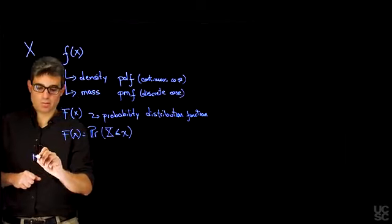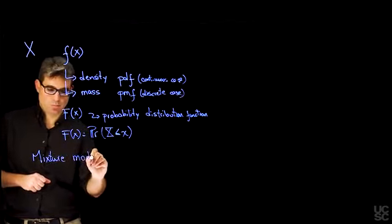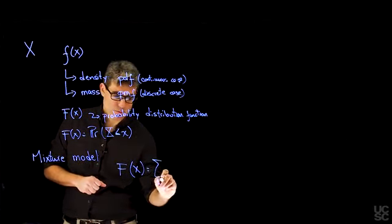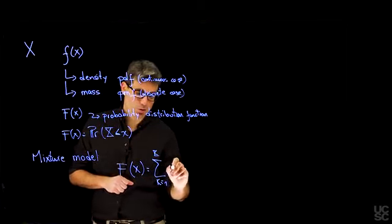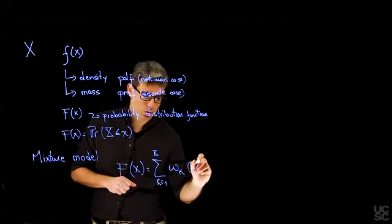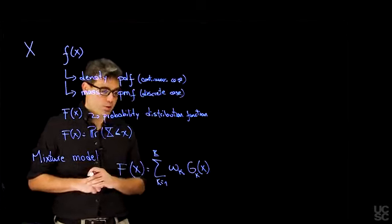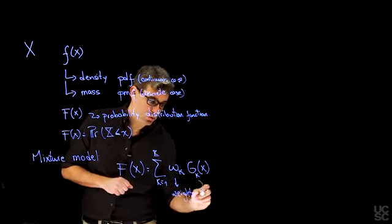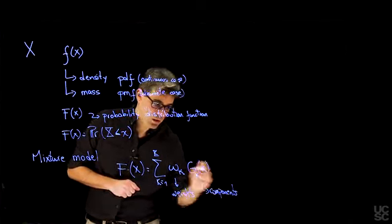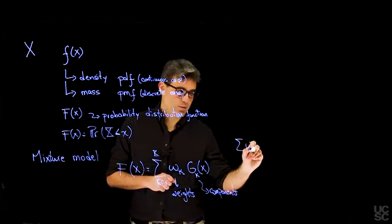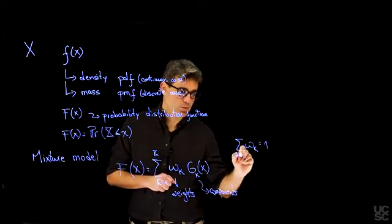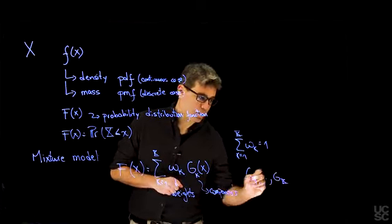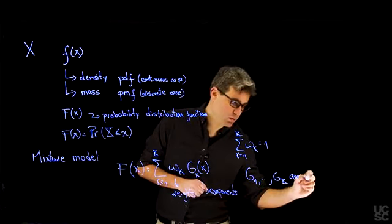For a mixture model, the probability distribution function takes the form of a sum over K components: a weighted sum of K component distribution functions G₁ through G_K. These are called the weights and components respectively. The weights are required to sum to 1, and G₁ through G_K are cumulative distribution functions.